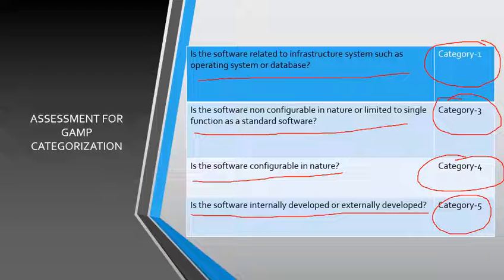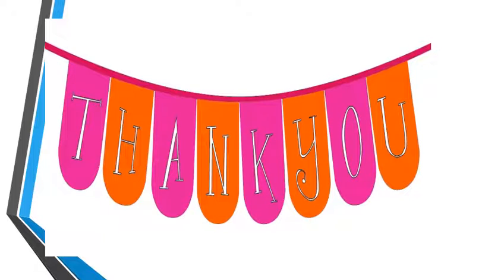So now, based on these evaluations, you can conclude whether the system is GXP applicable or not, whether the system follows electronic record and electronic signature applicability, and which GAMP5 category the system falls under. This is all about the GXP assessment. In the next video, we will discuss the validation project plan. I hope this video helps you better understand how to perform the GXP assessment. Thank you.